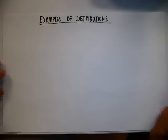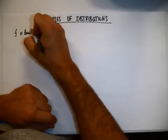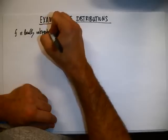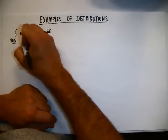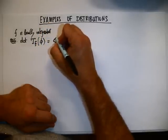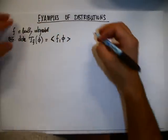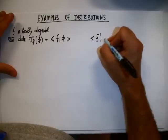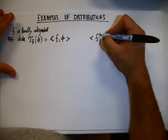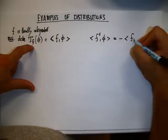Let's work out some examples so we can become familiar with the operations that involve distributions. We have seen that given a function f that is locally integrable, we can define a regular distribution as the functional T_f of φ given as the scalar product within the function f and the test function itself. We also saw that we can compute the derivative of the distribution f, and using integration by parts we show that this is equal to f, φ prime.